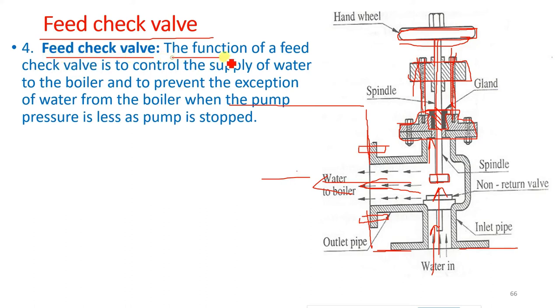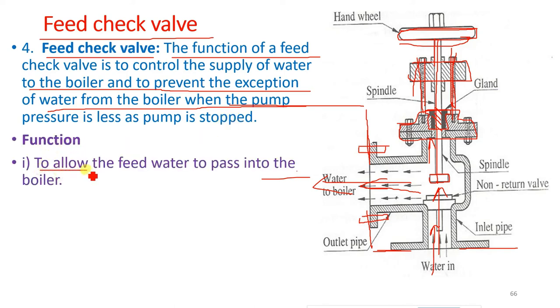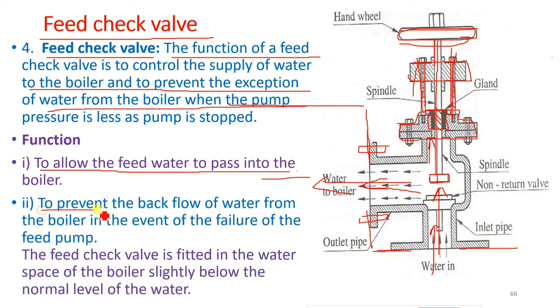Feed check valve: the function of feed check valve is to control the supply of water to the boiler and to prevent the ejection of water from the boiler when the pump pressure is less or pump is stopped. Function: to allow the feed water to pass into the boiler, to prevent the backflow of water from the boiler in the event of failure of the feed pump.